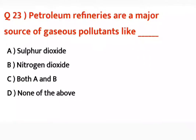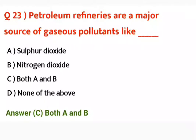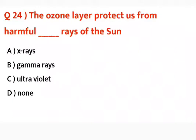Question number twenty-three: Petroleum refineries are a major source of gas-based pollutants like — petroleum refineries jo hain woh major source hain gas-based pollutants ka. Correct answer is both A and B — sulfur dioxide and nitrogen dioxide.